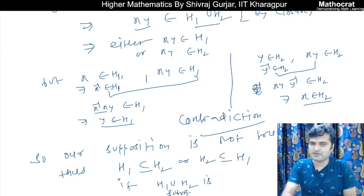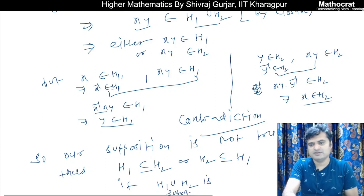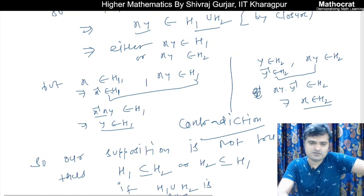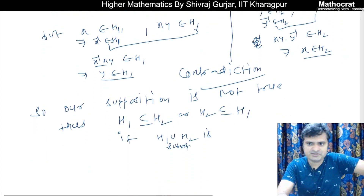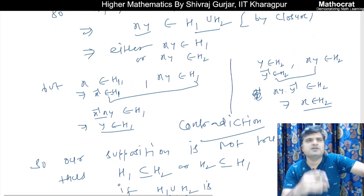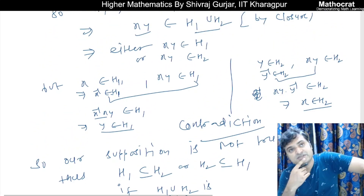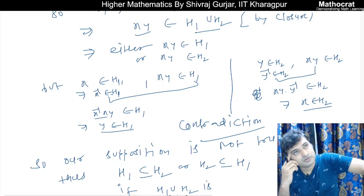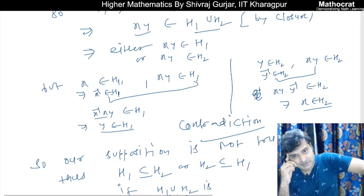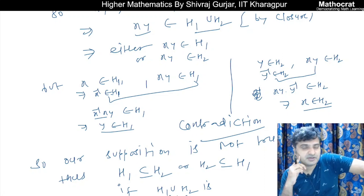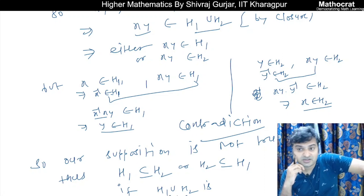So the subgroup concept is clear. Next, we will take up cosets and Lagrange's theorem, cyclic groups, and then we will discuss the permutation group. See you then, bye bye, take care.